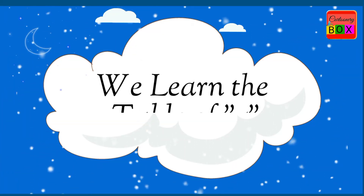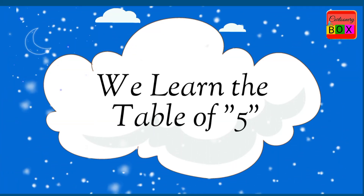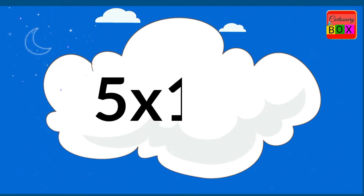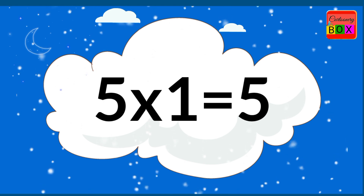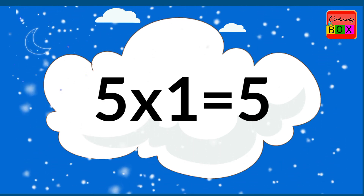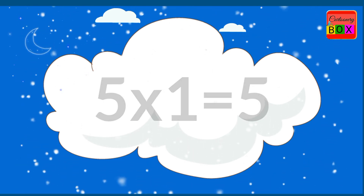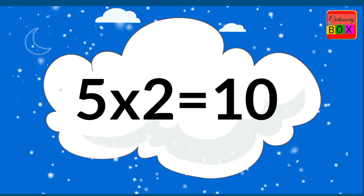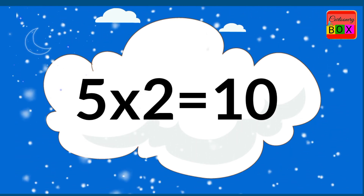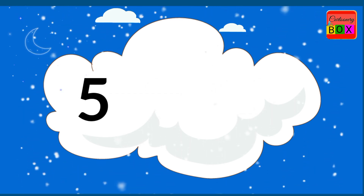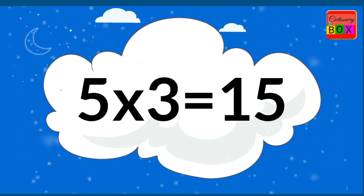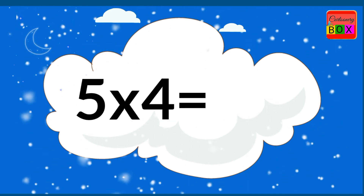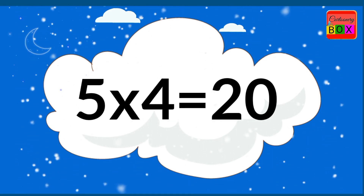Hi friends, we learn the table of five. Let's start. Five ones are five. Five twos are ten. Five threes are fifteen. Five fours are twenty.